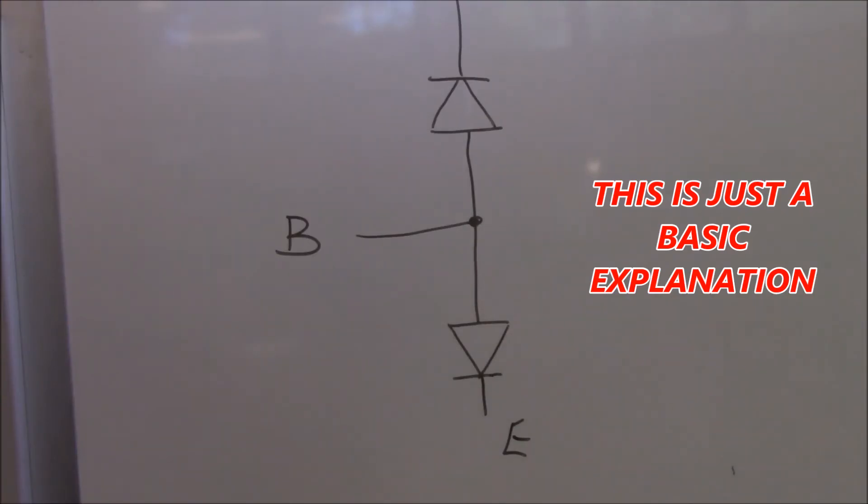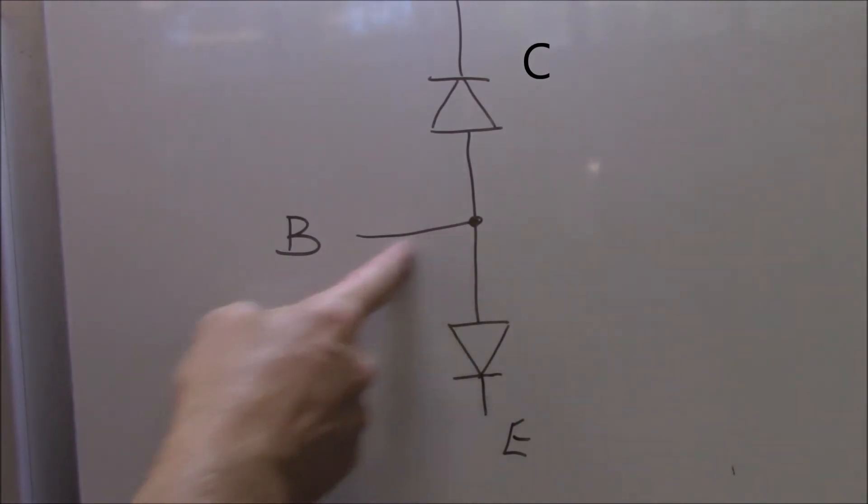Let me explain. For an NPN transistor the diodes face away from one another and there's a connection in the middle called the base. This is called the collector and this one over here is called the emitter. How do we test them?